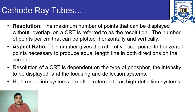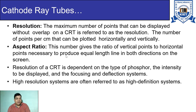Resolution can be defined as the maximum number of points that can be displayed without overlap on a CRT. It refers to the number of points per centimeter that can be plotted horizontally and vertically. If the resolution is high, the quality of the picture is high; if the resolution is low, the quality of the picture is poor. Aspect ratio is the ratio of vertical points to horizontal points necessary to produce equal-length lines in both directions on the screen. The resolution of a CRT is dependent on the type of phosphor, the intensity to be displayed, and the focusing and deflection systems.